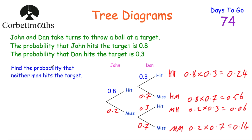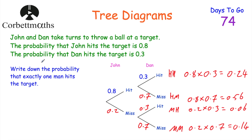The next question says: find the probability that neither man hits the target. Neither man hitting the target would be miss-miss, so it's 0.2 × 0.7 = 0.14. The probability that neither man hits the target is 0.14.